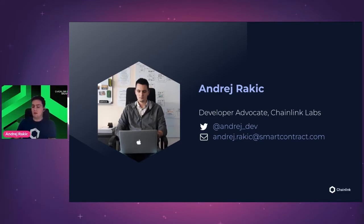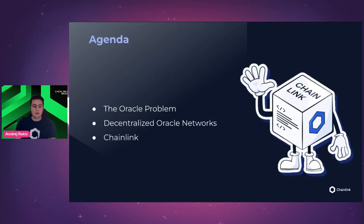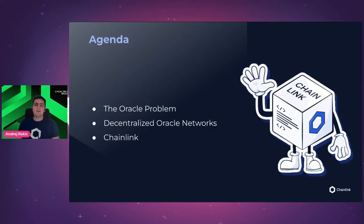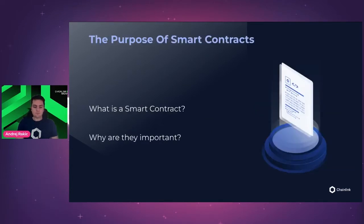I'm more active there than on my email. And also, if you're on Lens, my Lens handle is andrej.lens. So, quick housekeeping and agenda: today we are going to talk about the Oracle problem, the importance of decentralized Oracle networks, and what Chainlink protocol is. And if you missed SmartCon, we're going to briefly cover the new products announced at SmartCon that are coming pretty soon.